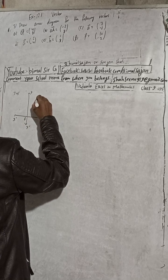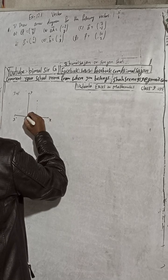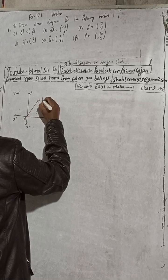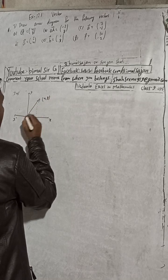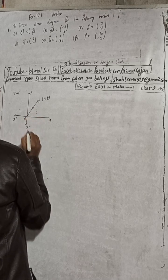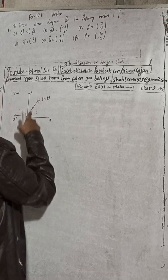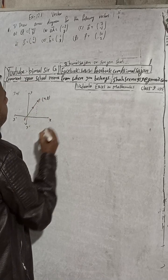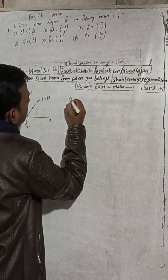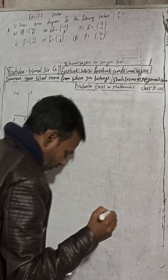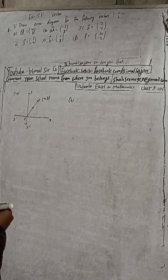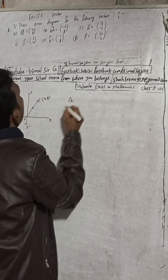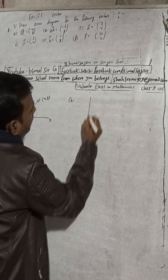This is our P point, and drawing this line is vector OP — from O to P at coordinates four comma eight. This is the arrow diagram for vector OP, from O to P. In the same way, part (b) will be drawn.